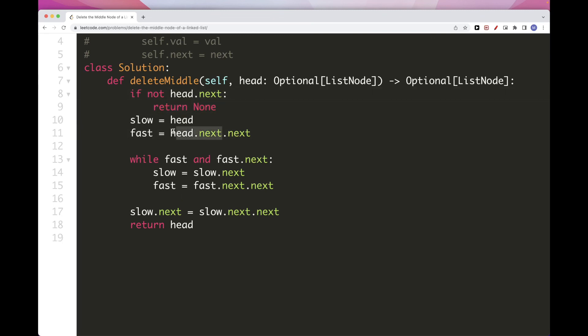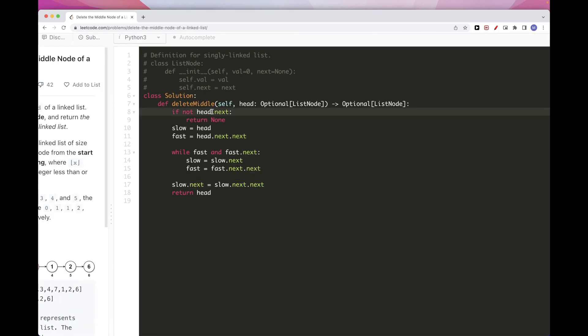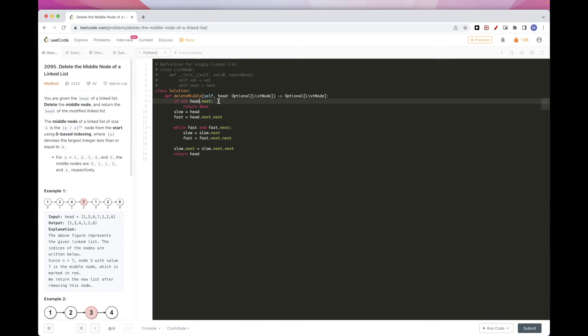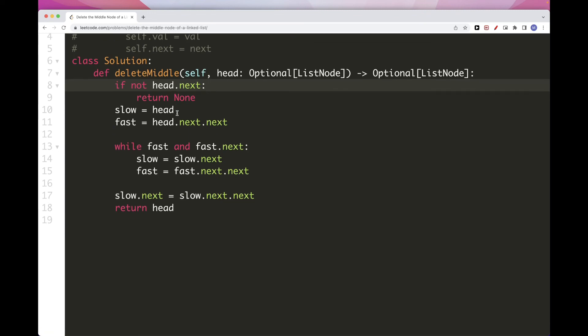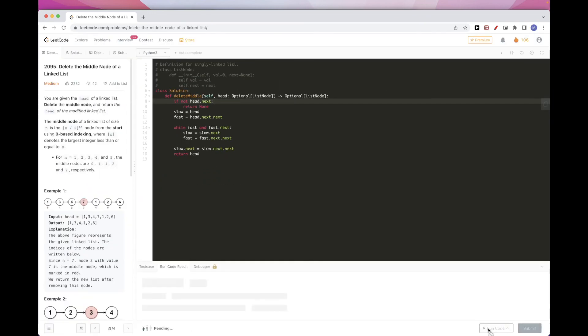Yeah, because if this is none, this here would fail. This dot next here would fail. So we want to just protect ourselves against that. This basically means there is just one node. So if there is just one node, you want to just remove that and return nothing. So let's run this.